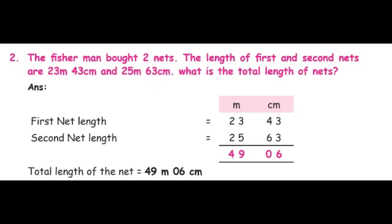The length of the first net is equal to 23 meters 43 centimeters. The length of the second net is equal to 25 meters 63 centimeters. The question is asking for the total length of the net — total means we must add them together. So the total length of the net equals we must add both values. As usual, centimeter column first, then the meter column.